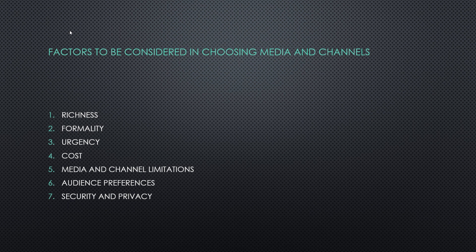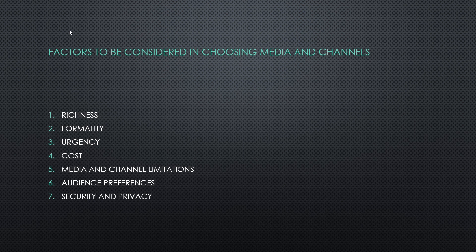Next is media and channel limitations — every medium and channel has limitations. For example, instant messaging is perfect for simple messages between two people but is less effective for complex messages. Next is audience preferences — while choosing media and channel, consider the expectations and preferences of the audience; if the audience prefers a particular format, use it if it works for the message and situation. The last point is security and privacy — never assume that digital communications are private, as networks may be hacked or messages may be forwarded to wrong recipients.